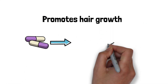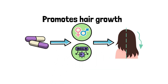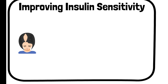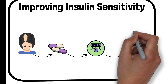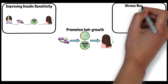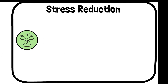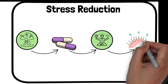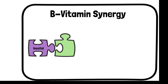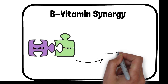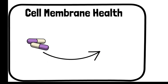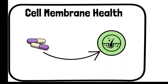Inositol has an indirect impact on better hair growth due to its role in managing hormones and insulin sensitivity. Since inositol can help improve insulin sensitivity, it indirectly benefits hair growth, as insulin resistance is often linked with conditions like PCOS that can cause hair thinning or hair loss. Inositol has also been studied for its potential in reducing anxiety and stress levels, which could indirectly benefit hair health. Additionally, inositol is often associated with the B vitamin family and works in synergy with other B vitamins, which are known to support hair health. As part of cell membranes, inositol also maintains the health of hair follicle cells, essential for strong hair growth.